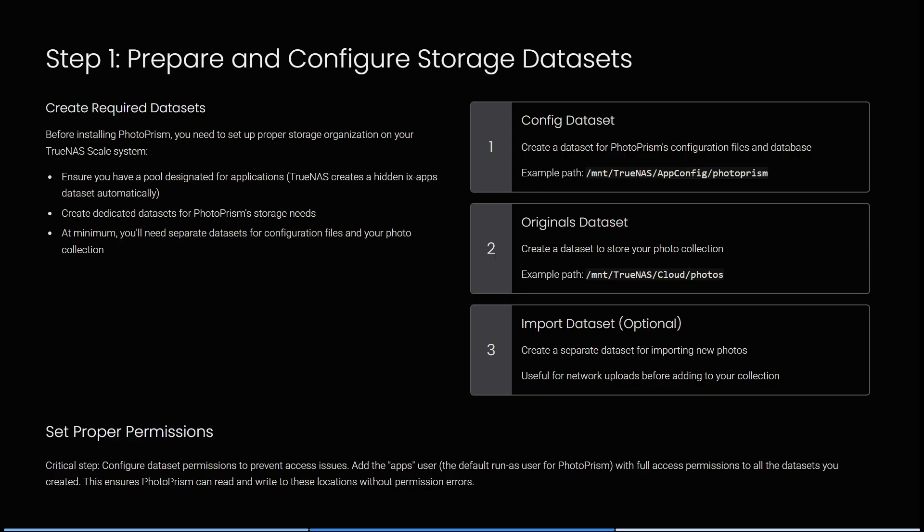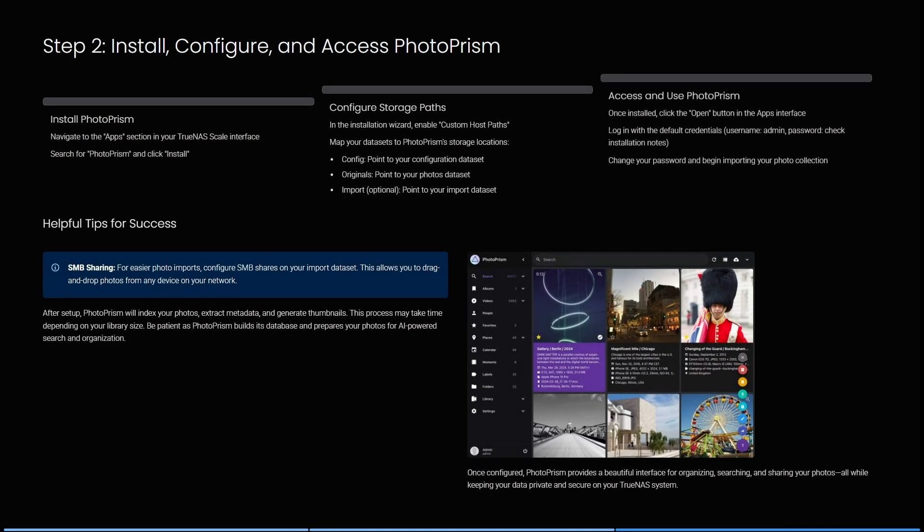You also need to set proper permissions so you can configure dataset permissions to prevent any access issues. All you need to do is add the apps user, which is the default run-as user for PhotoPRISM, with full access permissions to all your datasets you created. This will ensure that PhotoPRISM can read and write to these locations without having any permission errors.